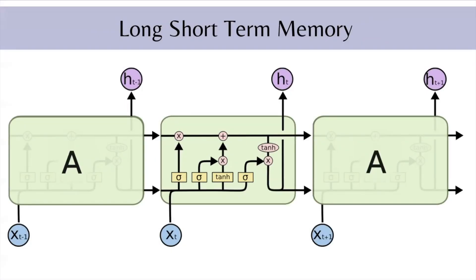Now we are clear with the basic intuition behind LSTM. Let's understand how it works — it looks complicated right now but believe me it is not that complicated. I have taken images from the famous blog by Christopher Olah; I have included the link in the description, you should definitely check it out. In LSTM, information flows from the cell state line by forgetting some information, by adding some information, and by outputting some information.